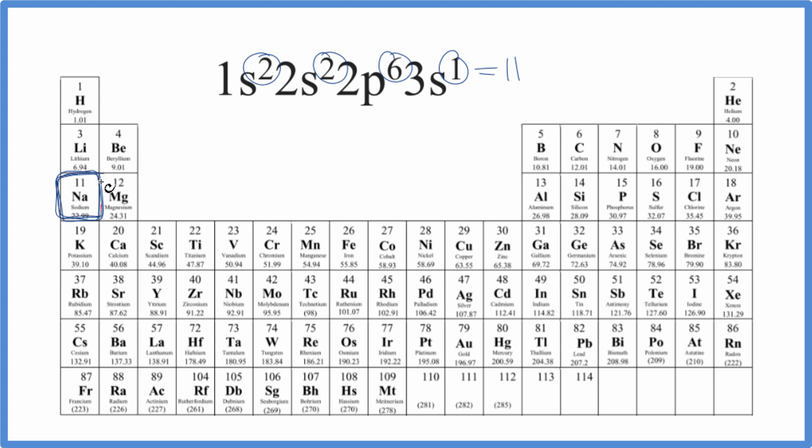So sodium is atomic number 11. That means it has 11 protons. Since it's neutral, it has 11 electrons. So this is the electron configuration for sodium.